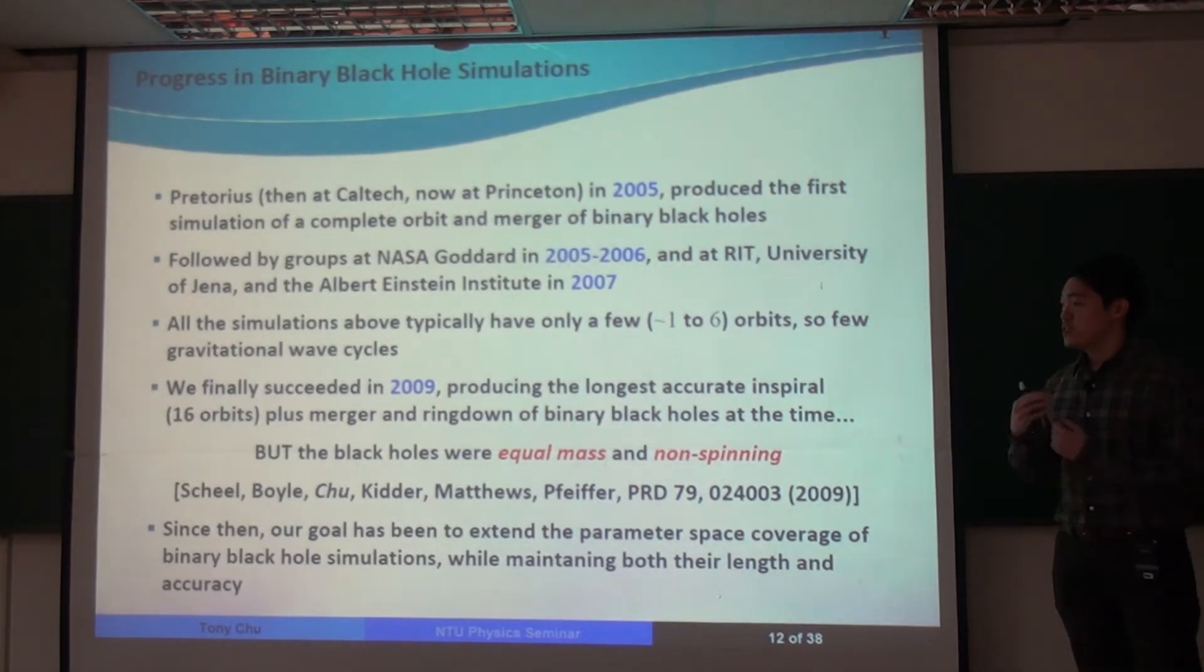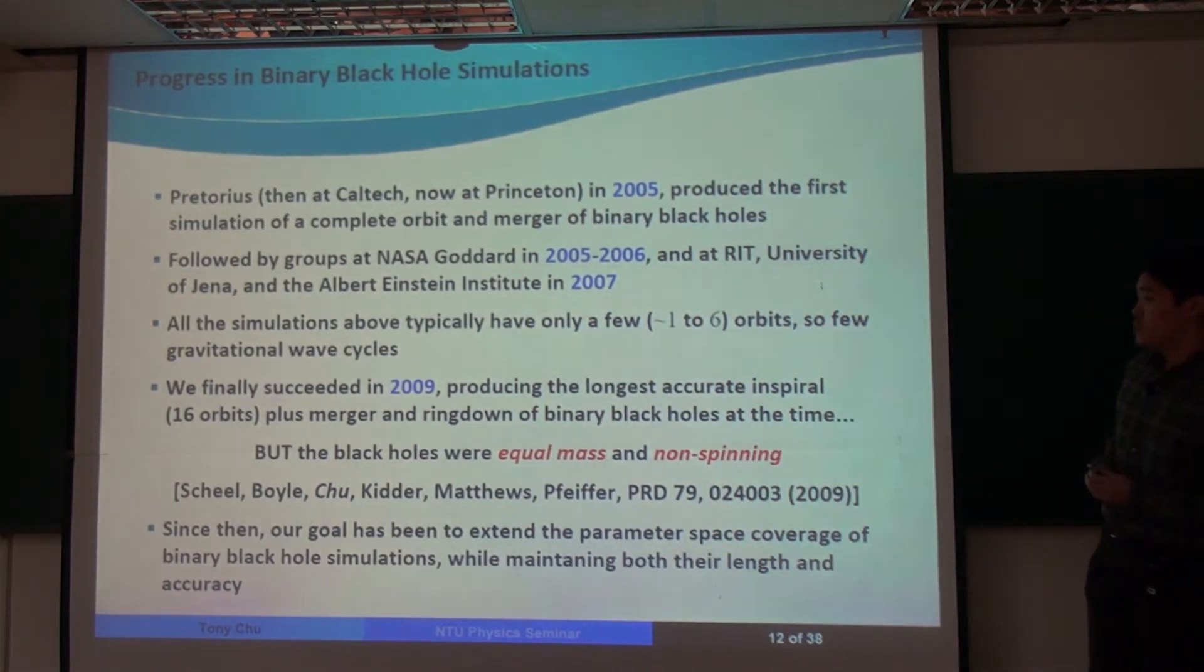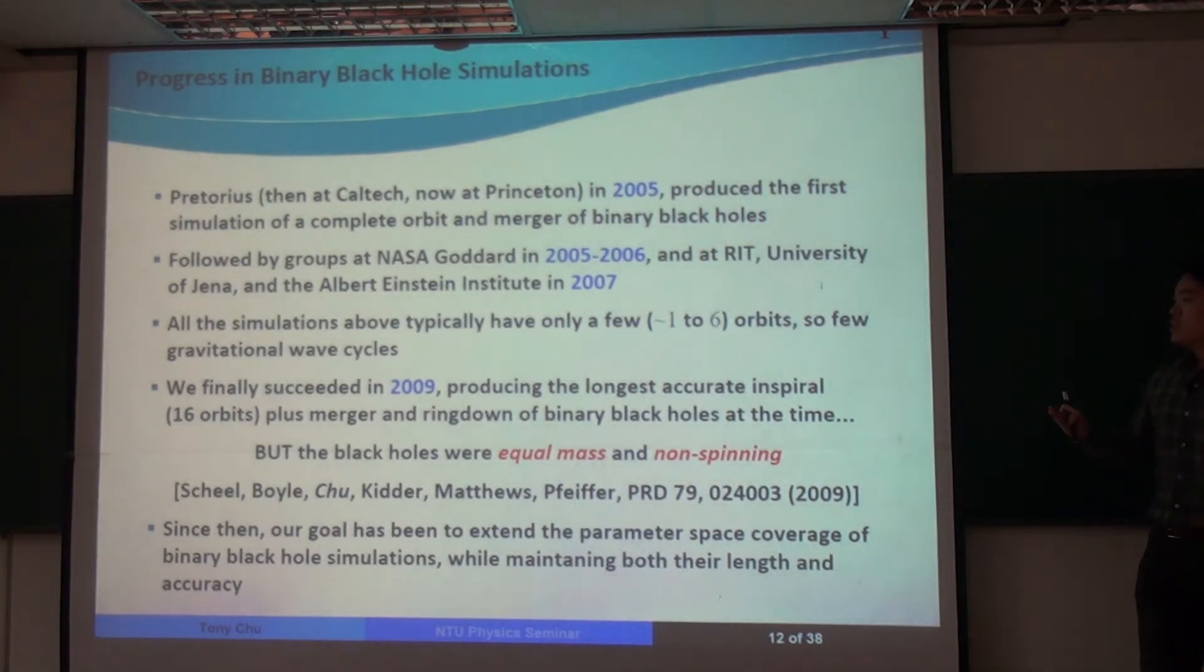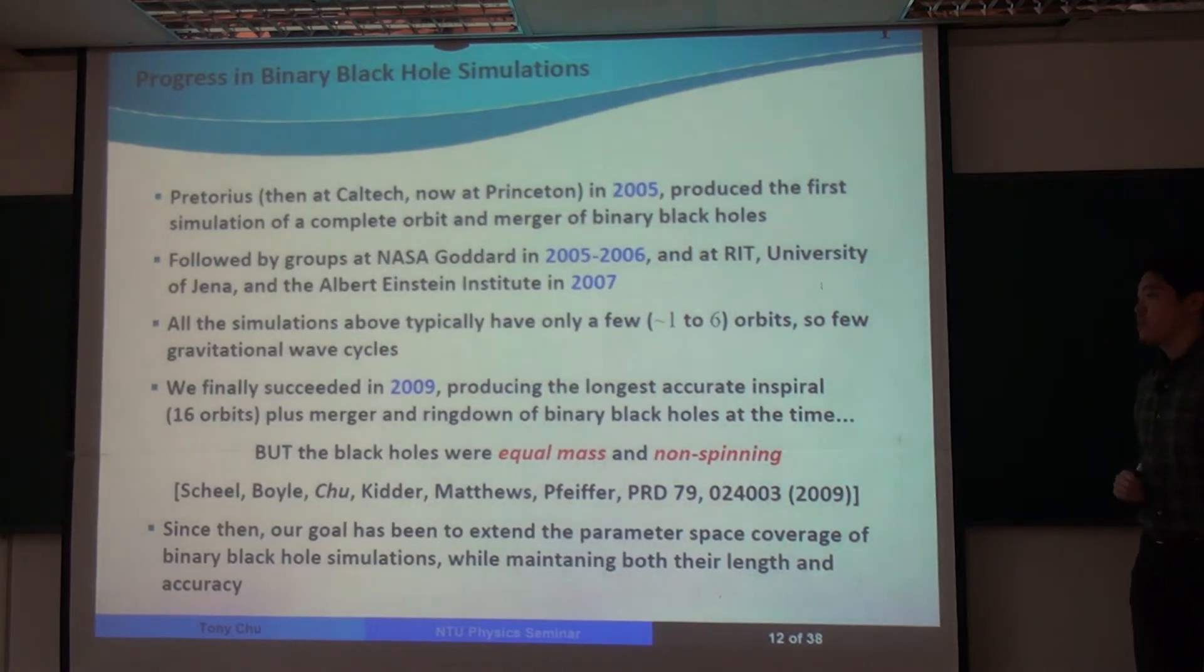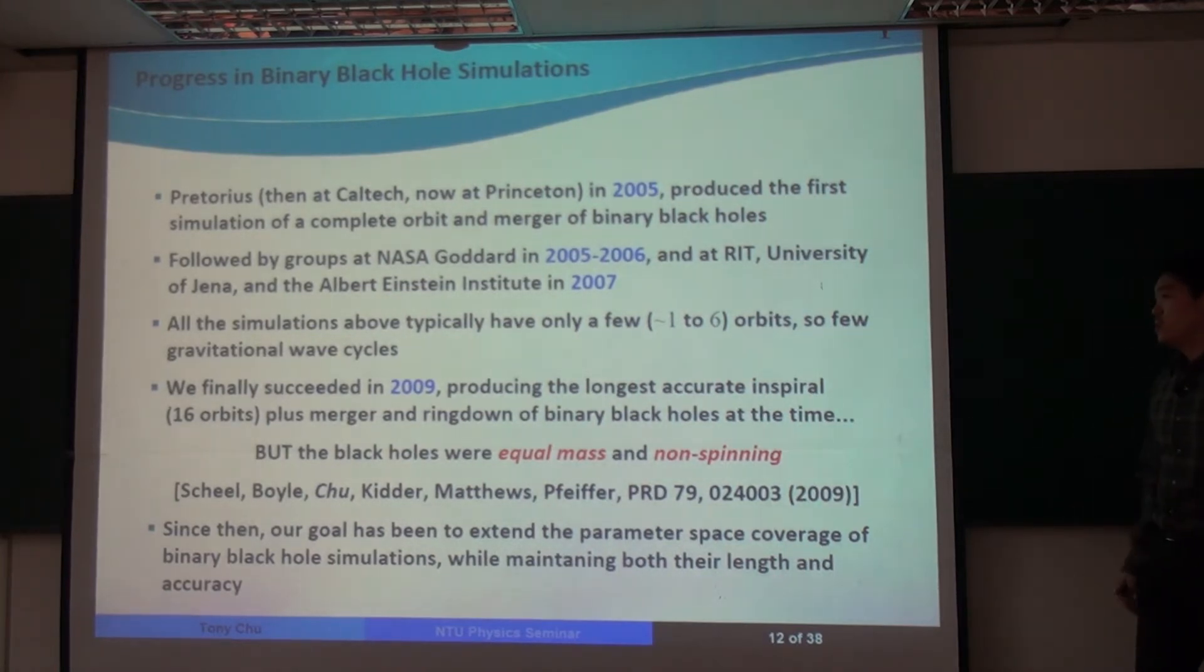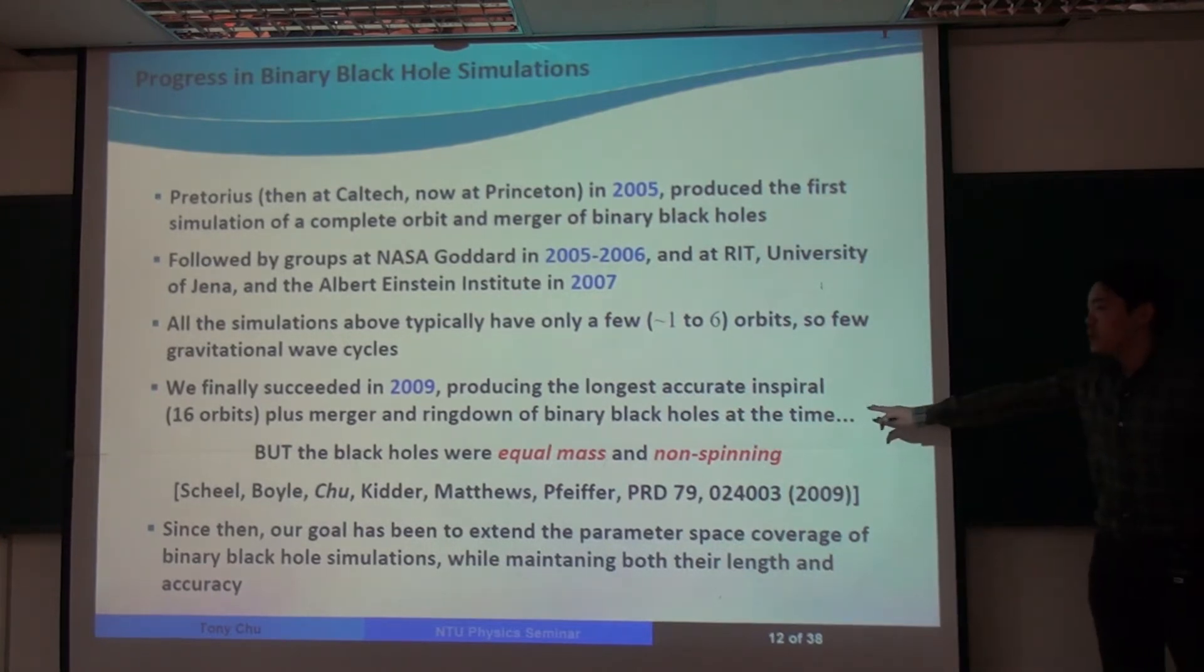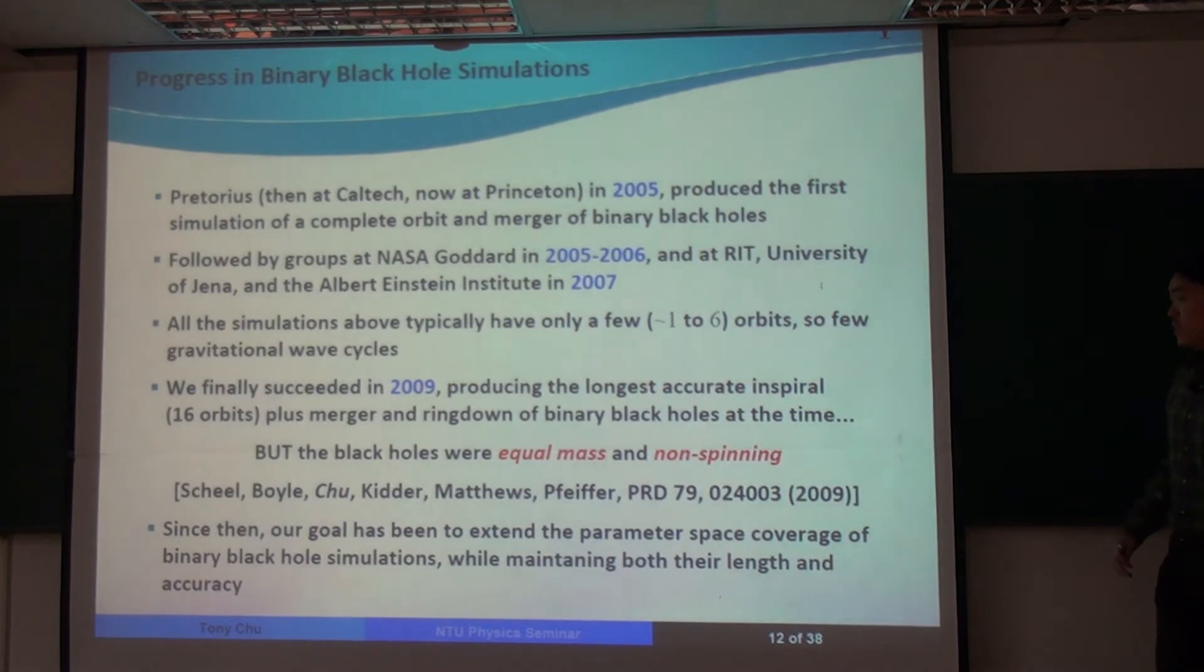And because we used spectral methods, unlike finite difference methods that all these other groups have used, it allowed us to produce the longest accurate inspiral, which was 16 orbits, plus the merger and ring down. So it was the longest and most accurate at that time, although it was for equal mass and non-spinning black holes. But since this initial success, our goal has been to extend the parameter space coverage of our binary black hole simulations.